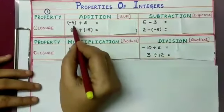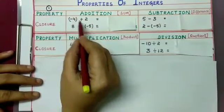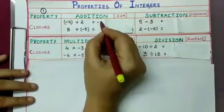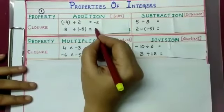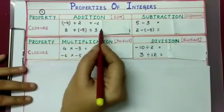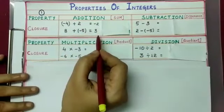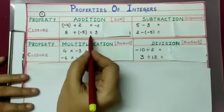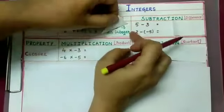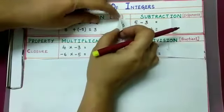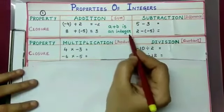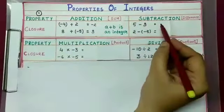Let us check closure under addition: minus 4 plus 2 equals minus 2; 8 plus minus 5 equals 3. The sum of two integers is an integer, so integers follow closure property under addition. Generally, for any two integers a and b, a plus b is an integer.